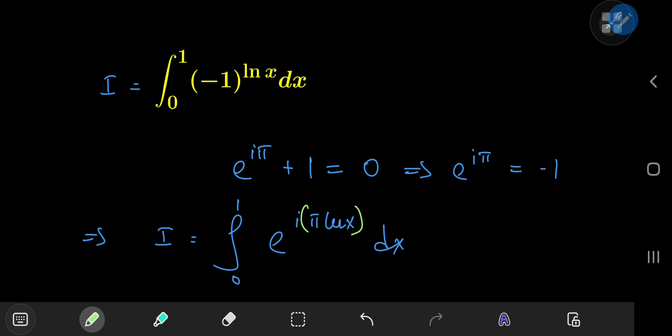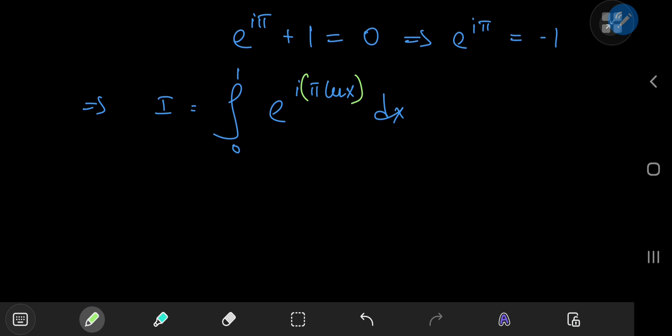Well recall the definition of the complex power function, the principal branch of the complex power function that is. a to the z where a is some non-zero complex number equals e to the z times log a where log a is the principal logarithm. So comparing the structure here with the structure of our integrand, this implies that e to the i pi log x equals x to the i times pi.